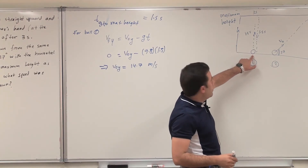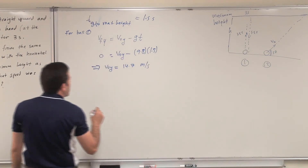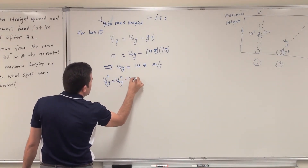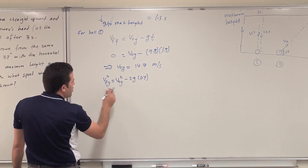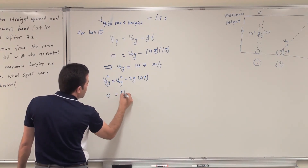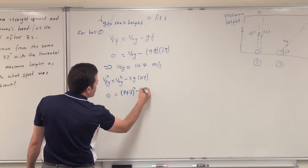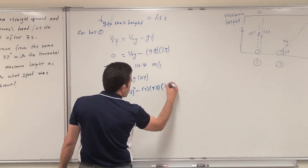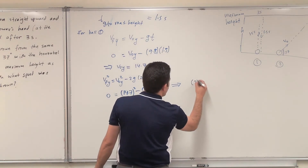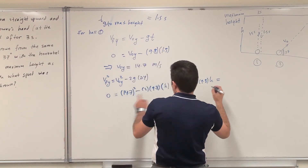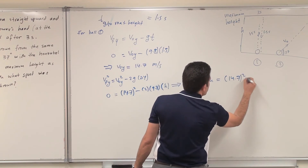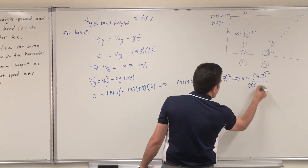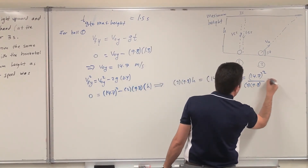Now I can find the maximum height h. Using the equation Vy_final² = V0y² minus 2g·Δy, at maximum height Vy equals zero, so: 0 = (14.7)² minus 2 times 9.8 times h. Solving: 2 times 9.8 times h equals (14.7)² divided by 2 times 9.8, which gives h equals 11 meters.